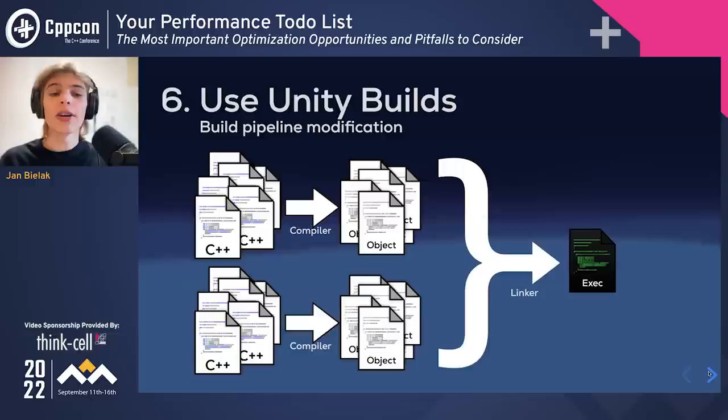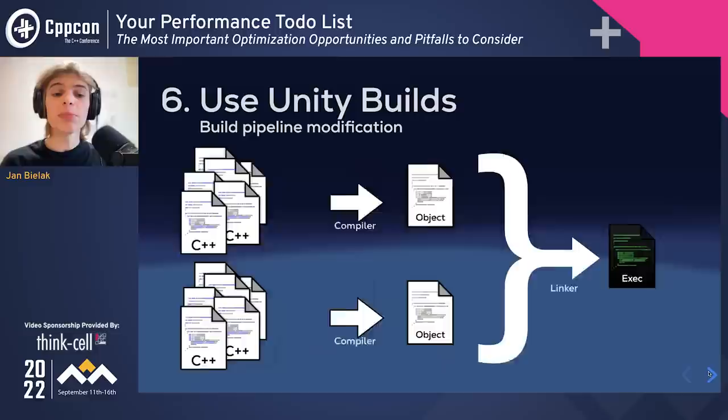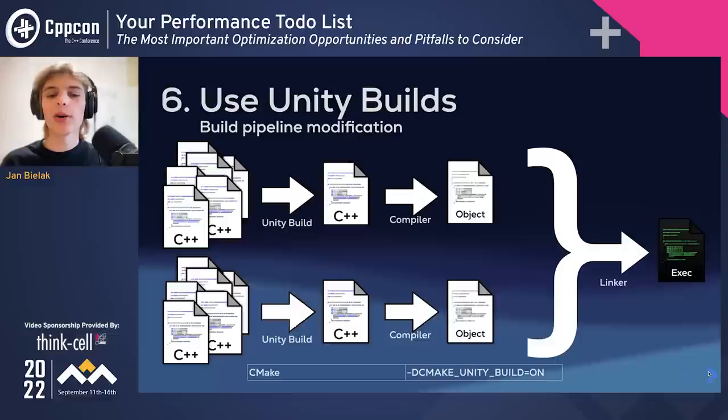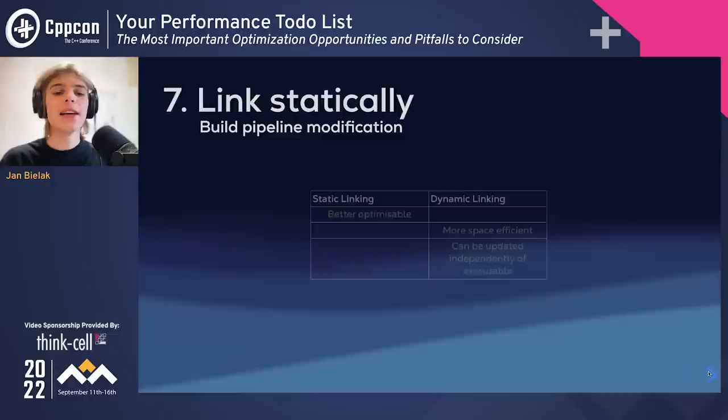Additionally or as a substitute for LTO, you can consider using Unity builds. This is a compilation technique which merges multiple source files into a single uber source file to produce only a few large translation units, which the compiler can better optimize. Unity builds also speed up compilation and linking by reducing the total number of source files. It's worth noting that enabling Unity builds is rarely as simple as enabling a switch, because a lot of code relies on macros that could be spilled between source files when combining them.